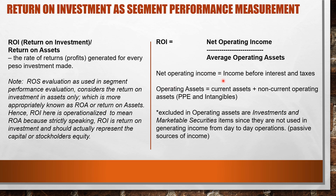Net operating income is the income before interest and taxes. Average operating assets refers to current assets plus non-current operating assets like PPE and intangibles. The operating assets are generally given in the problems, so there's no hassle in identifying them. An important point, however, is that it excludes investments and marketable securities because they are not used in the day-to-day operations.